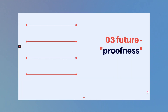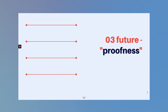Finally, the future-proofness of Obsidian. As I mentioned earlier, every page is locally stored on your machine in plain text files. What this means for the long term is that if the developers disappear, you'll still have access to your notes.